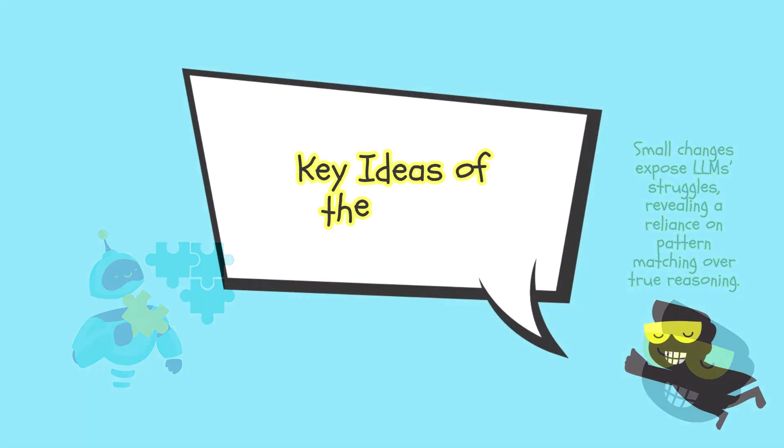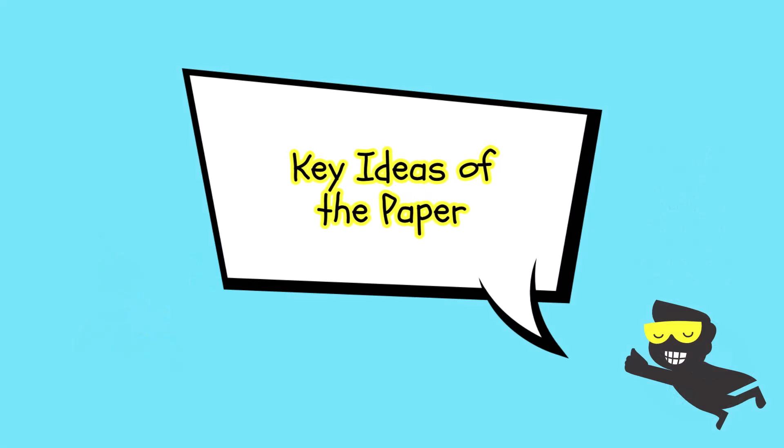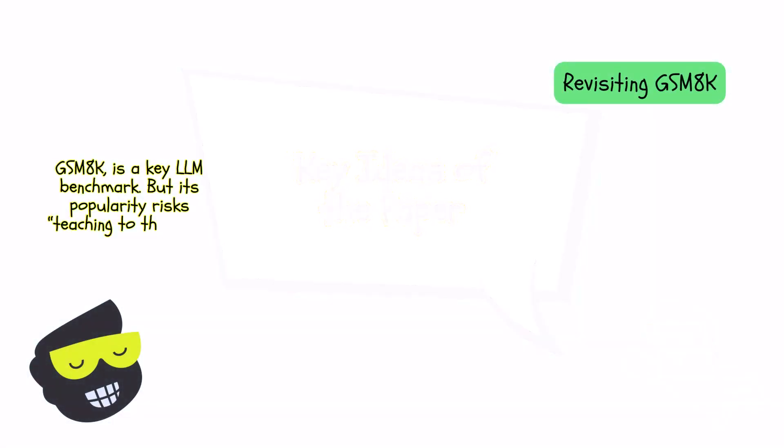Here are some key ideas of the paper. First one is revisiting GSM-8K, which has thousands of math problems. Many LLM scores here are a major bragging point, but it's also become so popular that we might accidentally be teaching to the test. Some examples in GSM-8K might be leaking into training data, and this can artificially boost accuracy.